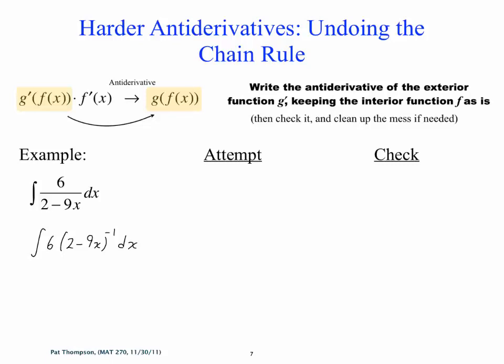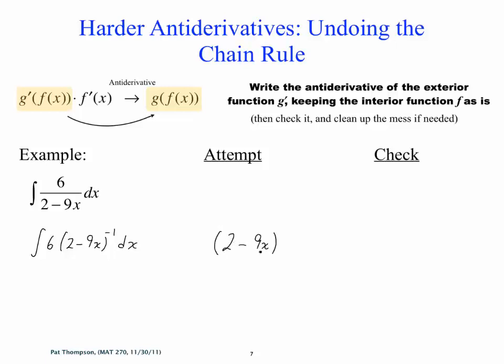Are we focusing on the 6 or the 2 minus 9x to the minus 1? Who remembers their antiderivatives? 2 minus 9x to the minus 1. Is it power rule? 2 minus 9x to the 0? 1 over 0? So in case you forget and you try this, you think, oh, it's power rule, I'm going to add the power — you get lots of warnings that something's wrong.